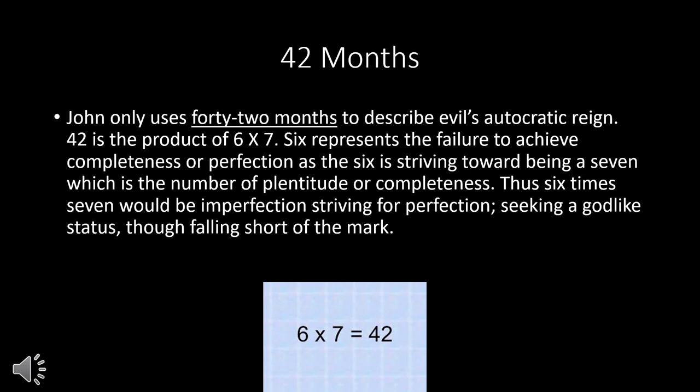In the past couple of chapters, we've seen 42 months, 1,260 days, and 'time, times, and half a time' — all representing three and a half years. However, John only uses 42 months to describe evil characters and evil's autocratic reign — the beast. Why? 42 is the product of 6 times 7. Six represents the failure to achieve completeness or perfection, as 6 is striving towards being a 7 but just can't make it. Seven is the number of plenitude or completeness. Thus, 6 times 7 would be imperfection striving for perfection — seeking a God-like status but falling short of the mark. So you only see 42 months in reference to evil characters in Revelation.